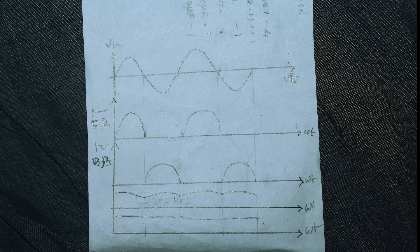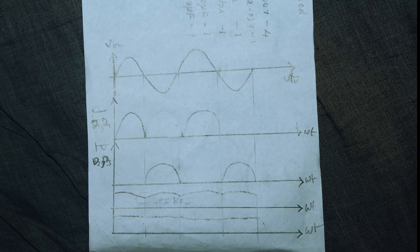And in the reverse bias condition, the diodes D2 and D3 will be forward biased. The D1 and D4 will be reverse biased. So during the negative cycles also you will get the output. So the overall output you can see here.